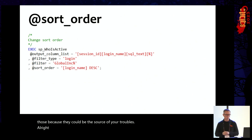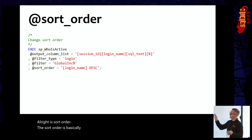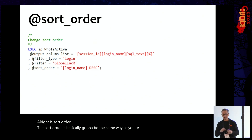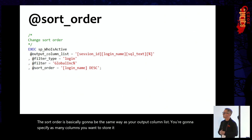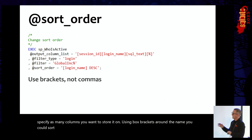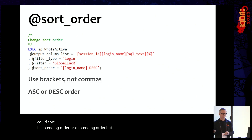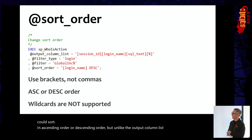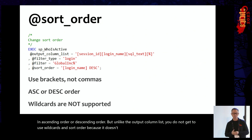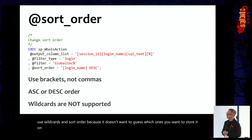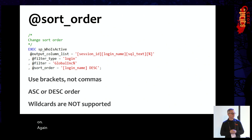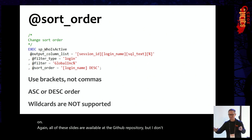Next is sort order. Sort order works basically the same way as output_column_list — you specify as many columns as you want to sort on using box brackets around the name. You can sort ascending or descending, but unlike output_column_list, you cannot use wildcards in sort order because it doesn't want to guess which ones you want to sort on. Again, all of these slides are available at the GitHub repository, but please feel free to take pictures.